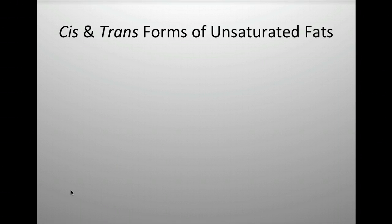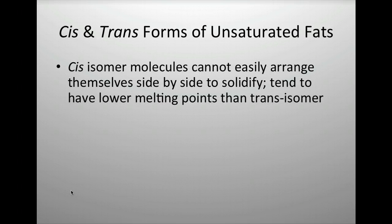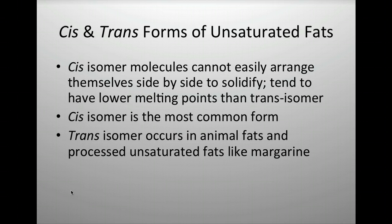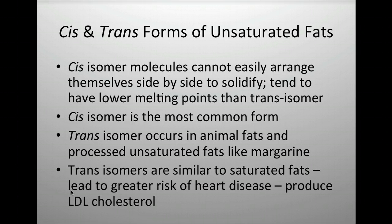Cis and trans forms of unsaturated fats — cis fats are generally better for you. In a cis isomer, two groups point in the same direction, so they can't stack easily and can't get close to each other. In a trans isomer, one group points down and one points up across the double bond, allowing them to pack tightly. So a trans fat behaves almost like a saturated fat, but luckily the cis isomer is the most common.